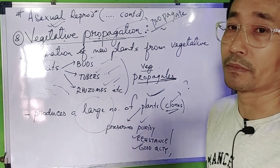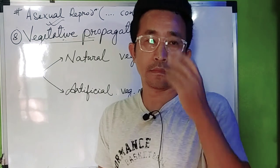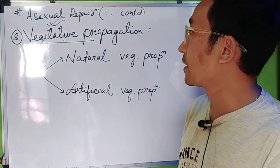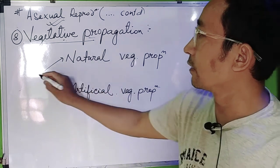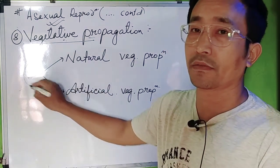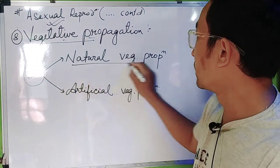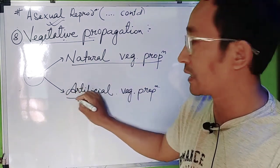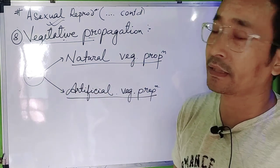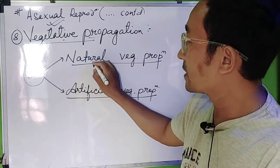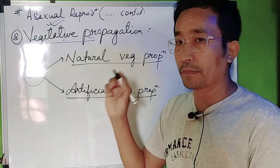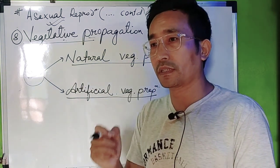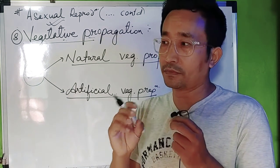There are two kinds of vegetative propagation: one is natural vegetative propagation and the other is artificial vegetative propagation. Natural propagation can involve modified stem, modified root, leaf, and other structures other than the flower.